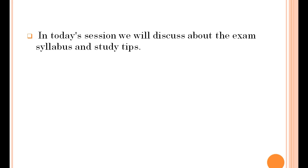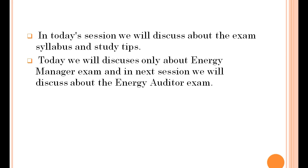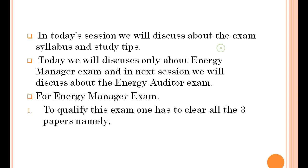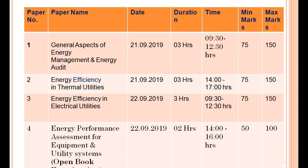In today's session we will discuss about exam syllabus and study steps. Today we will discuss only about the energy manager exam, and in the next session we will discuss about the energy auditor exam. To qualify this exam, one has to clear all three papers. Paper one is named 'General Aspects of Energy Management and Energy Audit', with a paper date of 21st September 2019, duration of three hours, and time from 9:30 a.m.